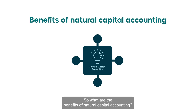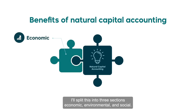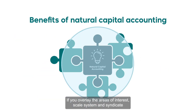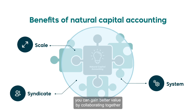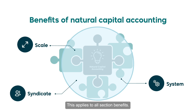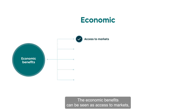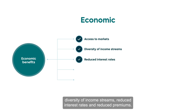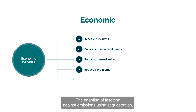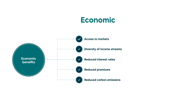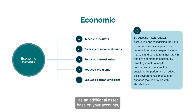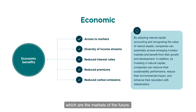So what are the benefits of natural capital accounting? I'll split this into three sections: economic, environmental and social. If you overlay the areas of interest — scale, system and syndicate — you can gain better value by collaborating together. The economic benefits can be seen as access to markets, diversity of income streams, reduced interest rates and reduced premiums, the enabling of insetting against emissions using sequestration, which enables access to the markets of the future. Natural asset definition is an additional asset base on your accounts, and the ability to access natural capital accounting investor markets, which are the markets of the future.